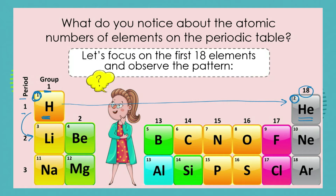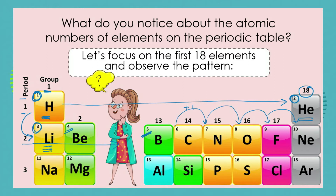If we skip down to the next period or row, we see that our third element, lithium, has an atomic number of three. Beryllium has four, boron five. So what is that pattern? Every element that comes next along a row or period increases the atomic number by one.